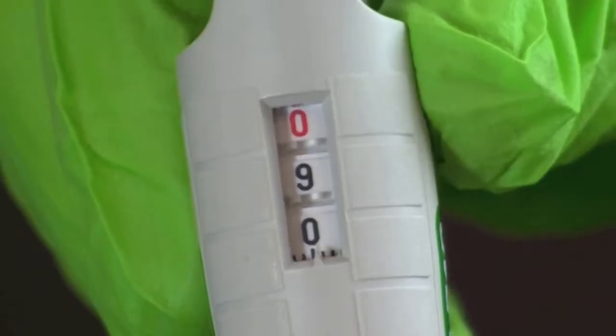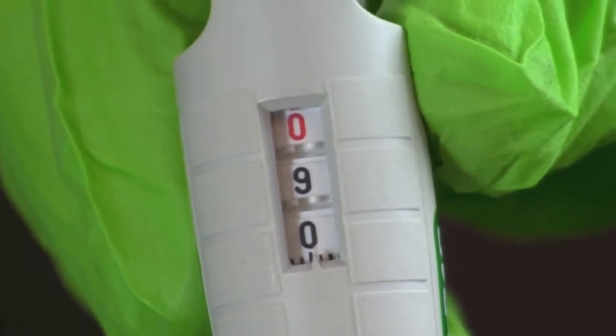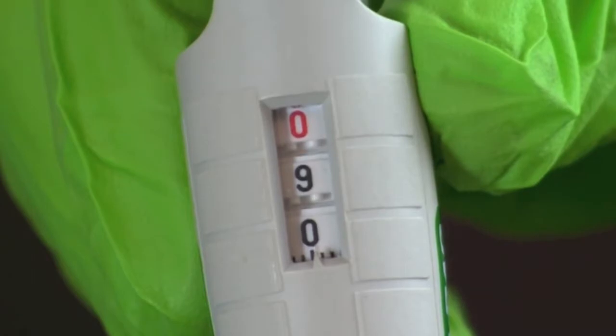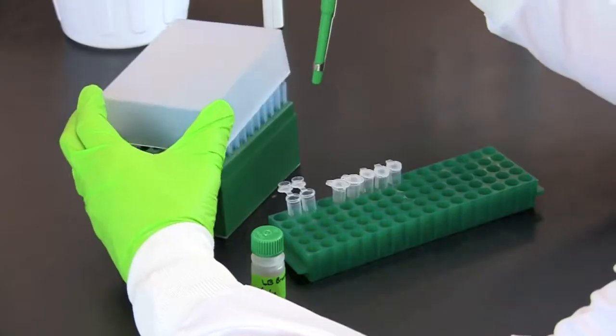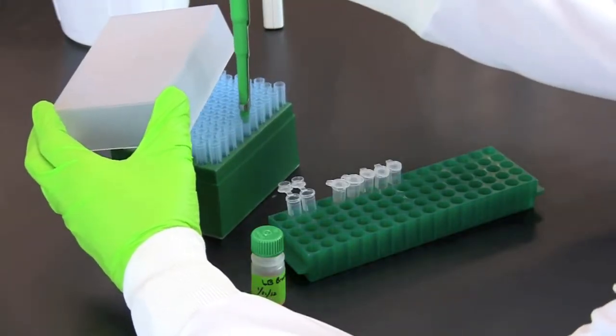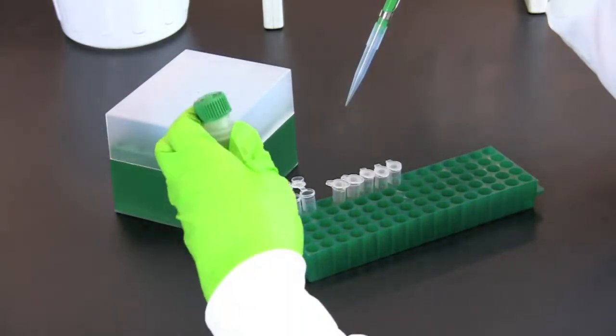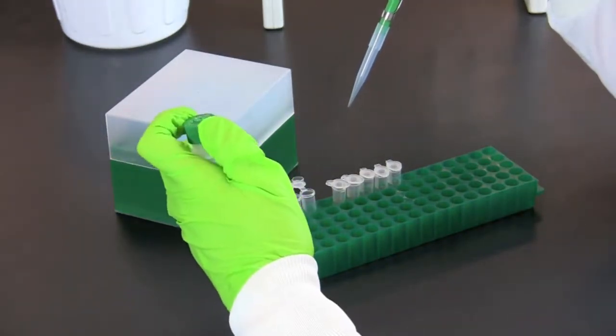Using a 100 to 1000 microliter micropipette set the volume to 900 microliters. Using aseptic technique, pipette 900 microliters of LB broth into each microcentrifuge tube.